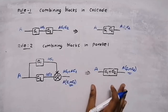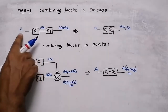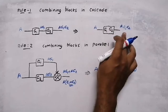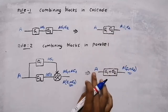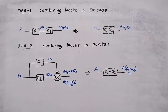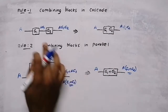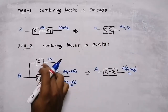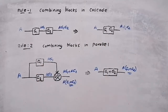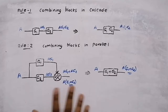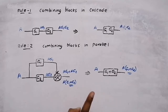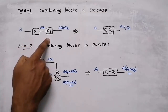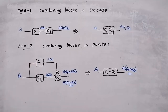After doing block diagram reduction, it should not affect the input and output — we should get the same input and output. So when two blocks are in series, just multiply them; if two blocks are in parallel, just add them. For all questions, first check whether there are blocks in series or blocks in parallel.